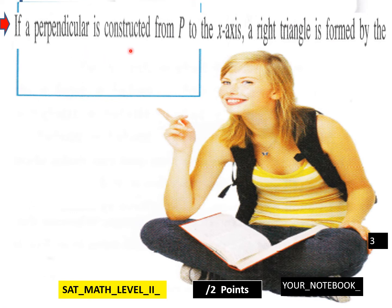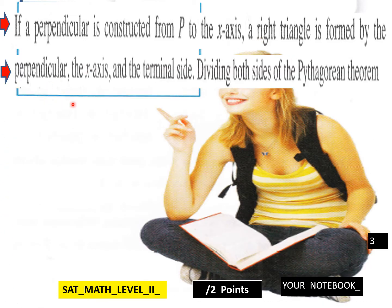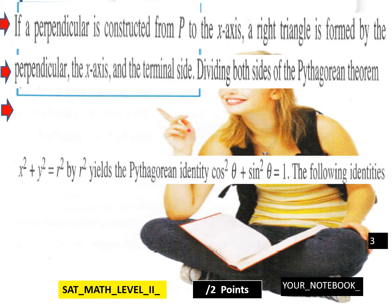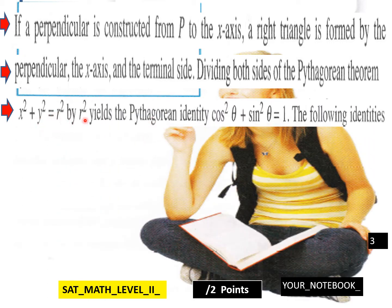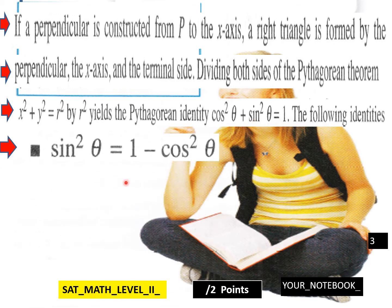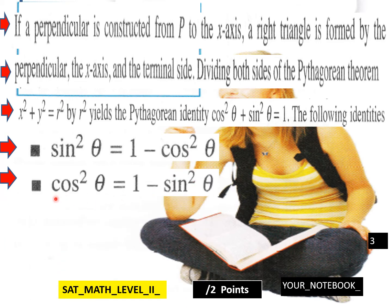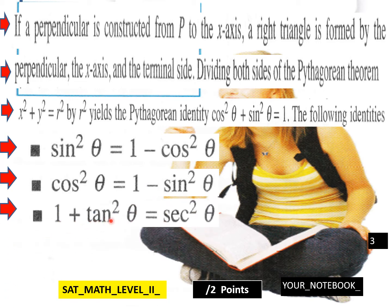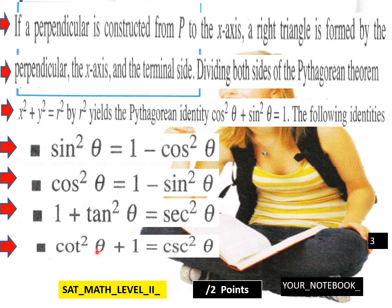If a perpendicular is constructed from P to the x-axis, a right triangle is formed by the perpendicular, the x-axis, and the terminal side. Dividing both sides of the Pythagorean theorem — x squared plus y squared equals r squared — by r squared yields the Pythagorean identity: cosine squared theta plus sine squared theta equals 1. The following identities follow: sine squared theta equals 1 minus cosine squared theta, cosine squared theta equals 1 minus sine squared theta, 1 plus tan squared theta equals secant squared theta, and cotan squared theta plus 1 equals cosecant squared theta.